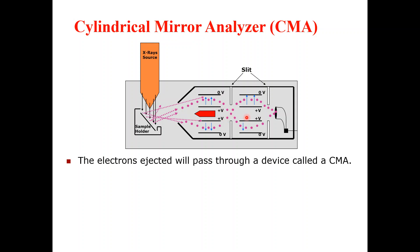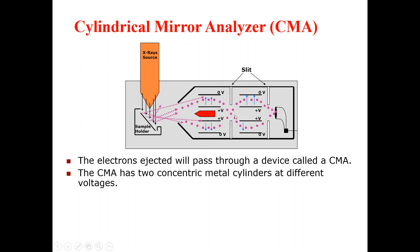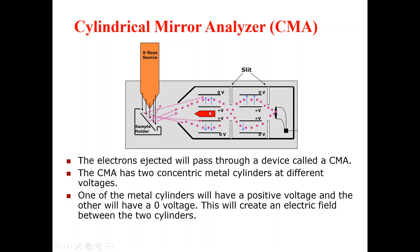The different parts and how they work — that is the key of this lecture. Here you can see in this figure that the CMA has two concentric metal cylinders at different voltages. There is a first cylinder and a second cylinder, and you can see that one of the cylinders will have a positive voltage and the other will have a zero voltage.